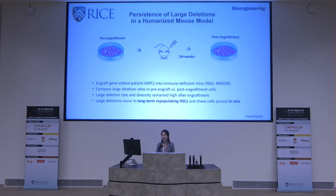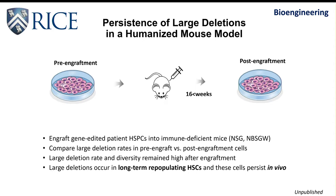We investigated the persistence of large deletions using a humanized mouse model. We engrafted gene-edited patient HSPCs into immune-deficient mice and compared large deletion rates in pre-engraftment and post-engraftment samples. Large deletion rates and diversity remained high after engraftment, showing that large deletions occur in long-term repopulating hematopoietic stem cells and these cells persist in vivo.